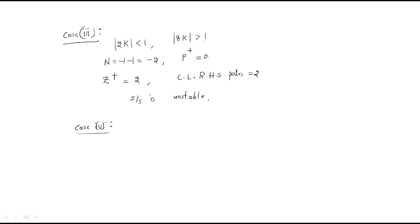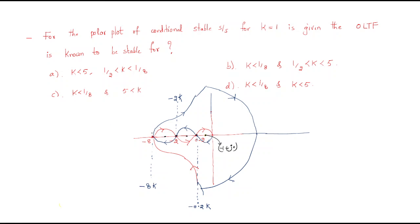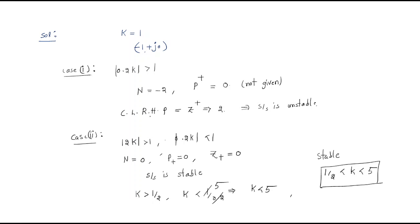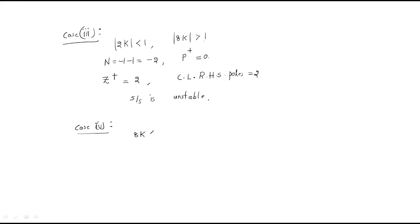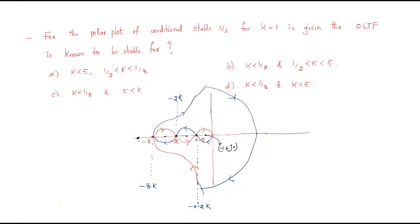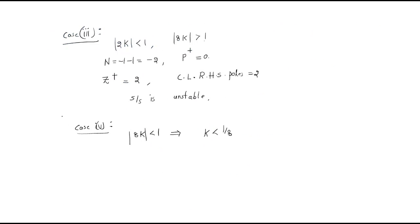Case 3 is not valid. For Case 4, if minus 1 plus j0 is outside the outermost point, the condition is 8k less than 1, giving k less than 1/8. The encirclements n equals 0, open loop poles p+ equals 0, and closed loop poles z+ equals 0. At this condition, the system is stable.